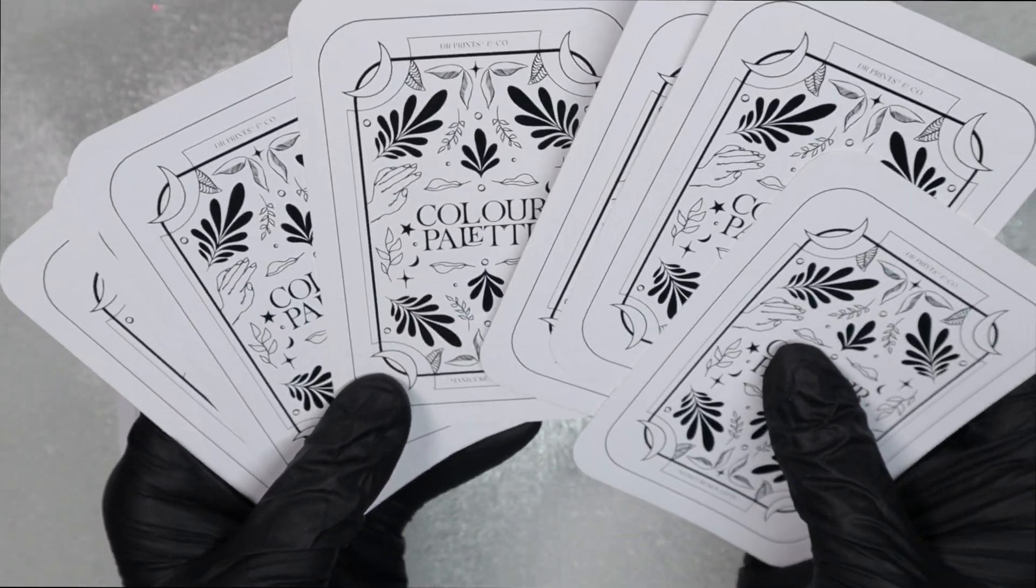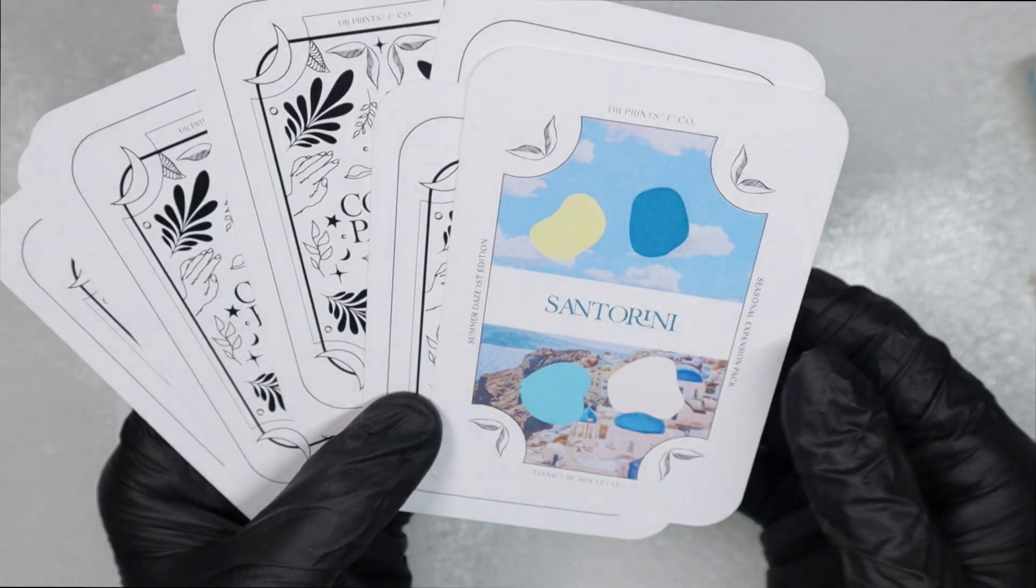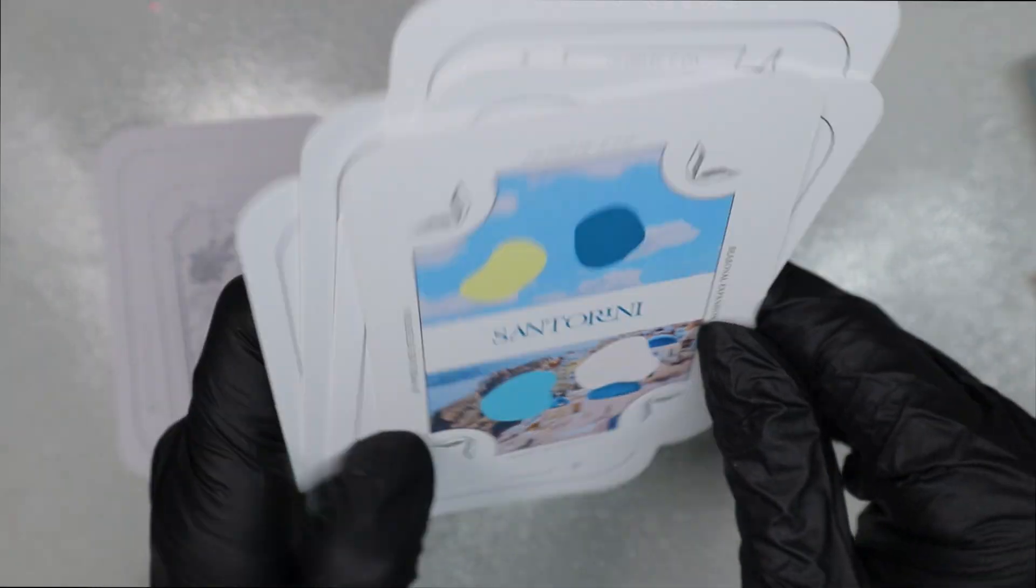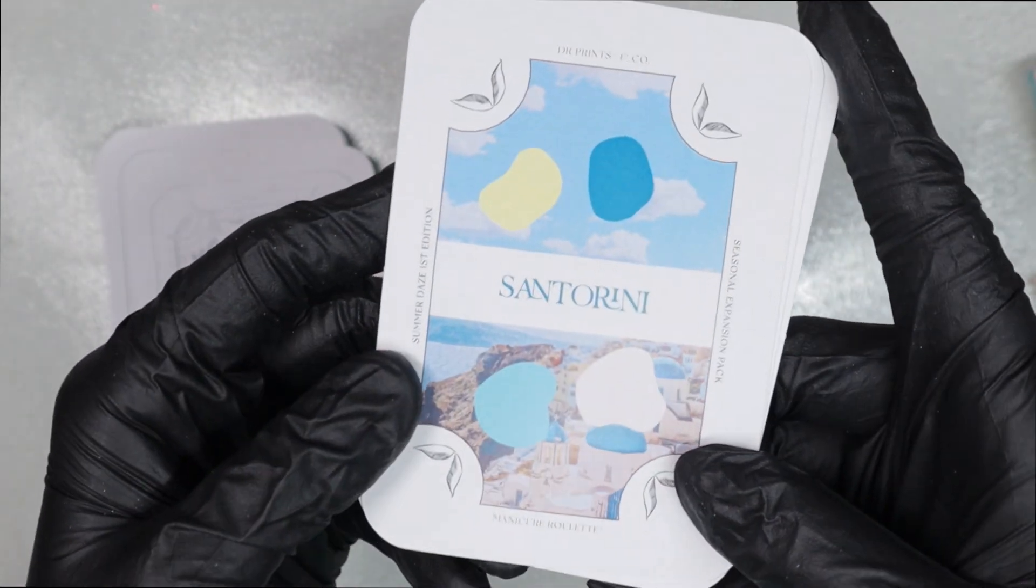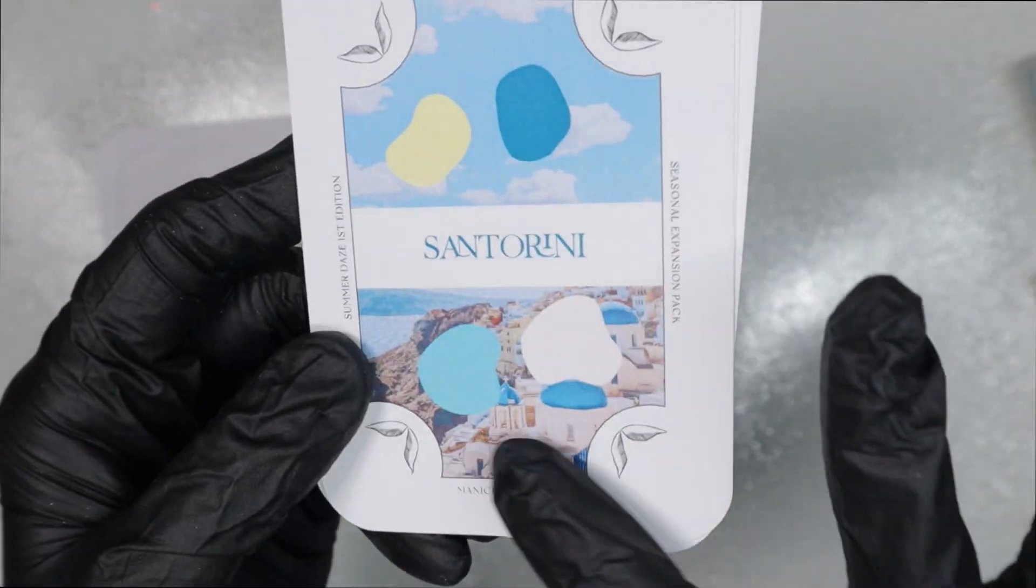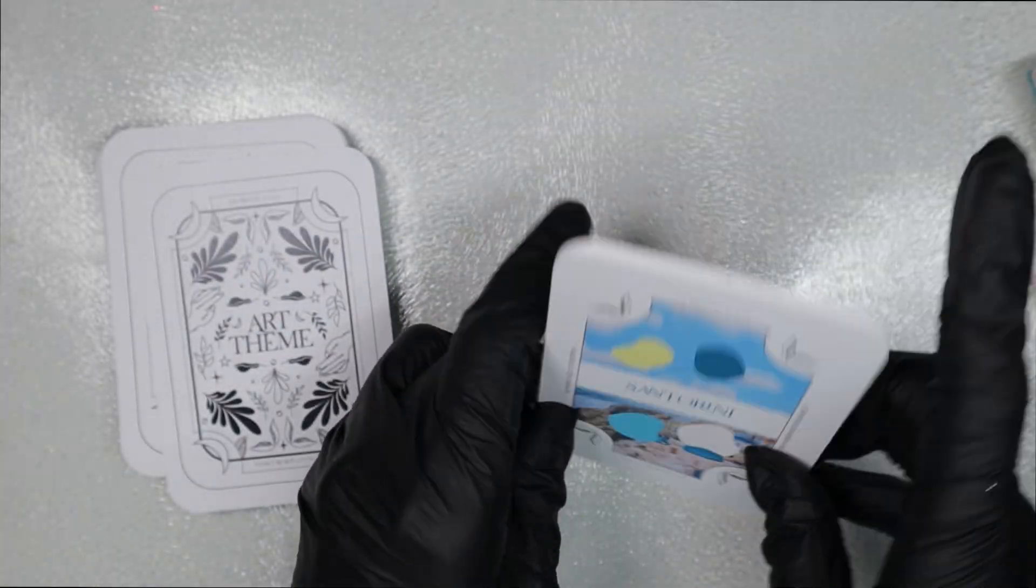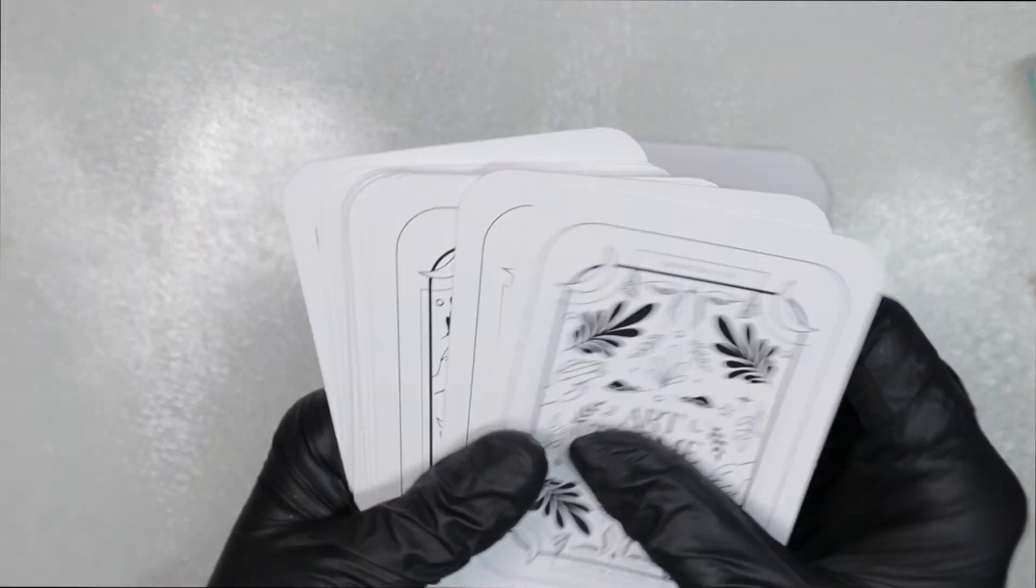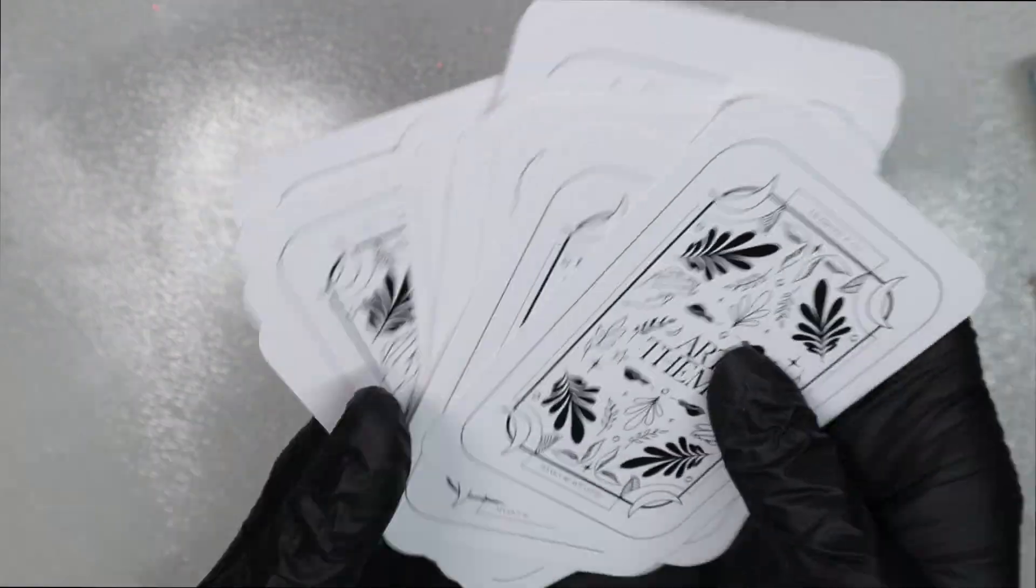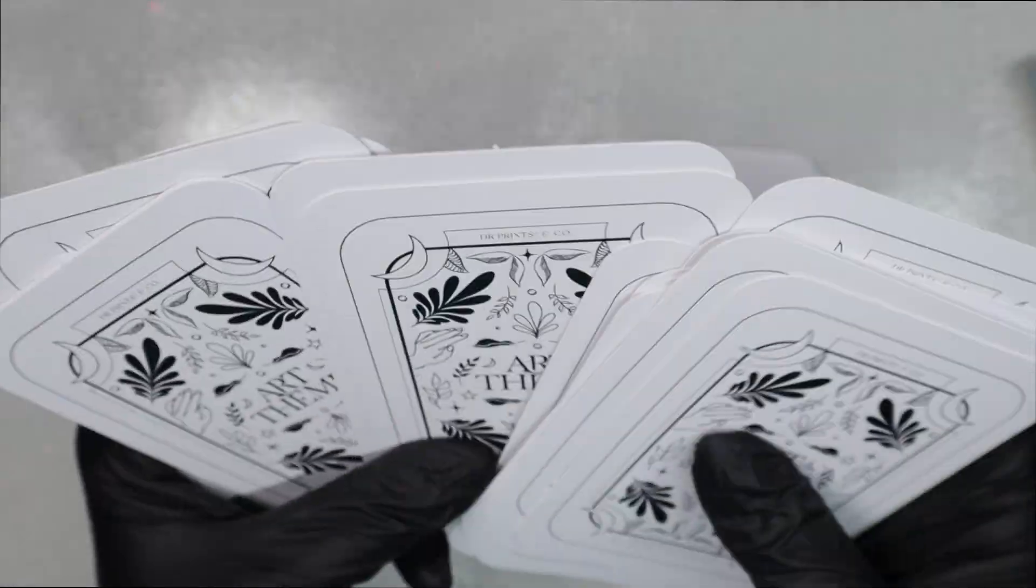So first things first, I'm picking a color palette theme. This month I'm only drawing two cards, and the first card is Santorini, so these are the four colors I get to play with. Next up, after the color palette, I select the art theme. The color palette shows the colors we get to play with, but the art theme decides the style, what design we're going for. So I'm going to shuffle these cards and pull out an art theme card.